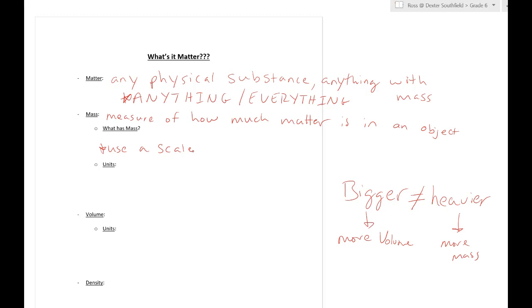We use different units to describe how much matter is in an object. We're going to use the metric system forever in science class. The base would be grams—that could be kilograms, that could be milligrams, all different prefixes.